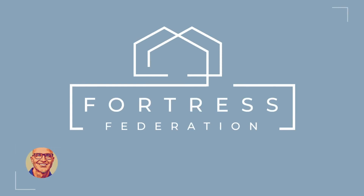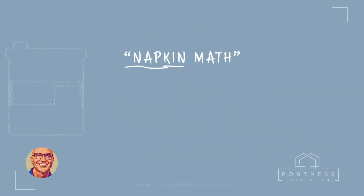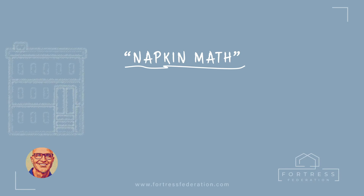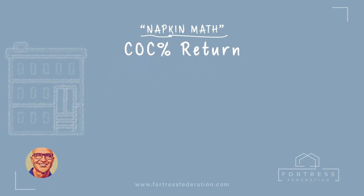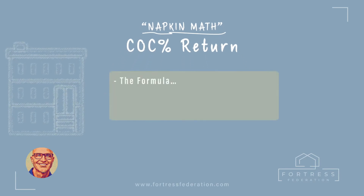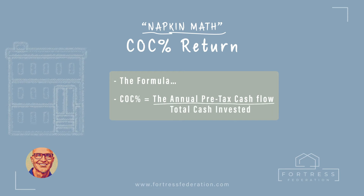Fortress Federation welcomes you to a segment we like to call Napkin Math, a simple approach to doing the numbers. Here we provide the formula for the cash-on-cash return. The formula: cash-on-cash return equals annual pre-tax cash flow, divided by the total cash invested.